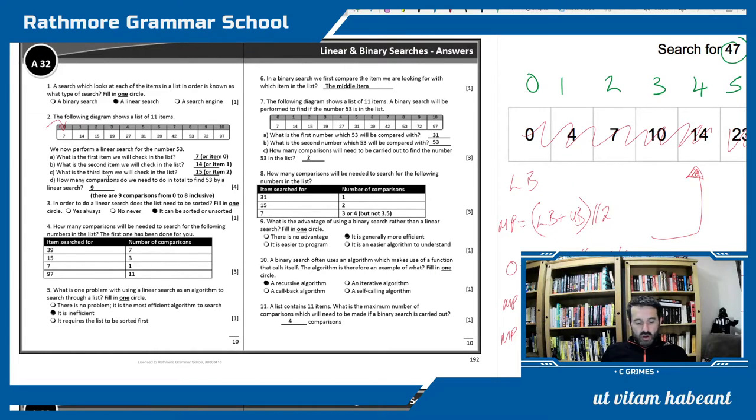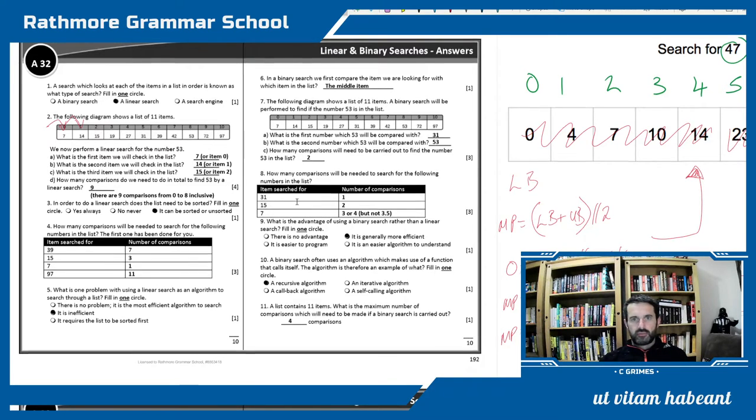If it asks what is the second term, it's item 1 or the number 14. So how many comparisons? Number 53. Some people got this wrong. To find 53, if we look at 53 and it's position 8, but you're counting from 0 to 8 inclusive and that's 9 searches. And again here it's pretty straightforward. The linear search is self-explanatory. We'll just focus on the answers for our binary.